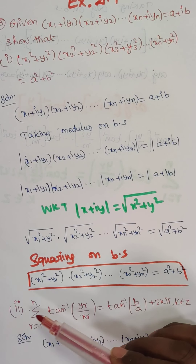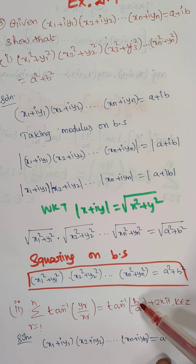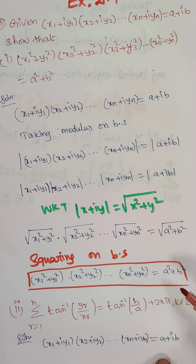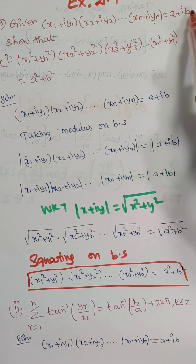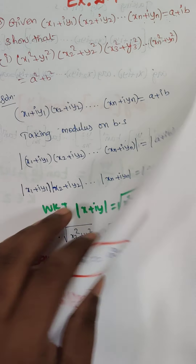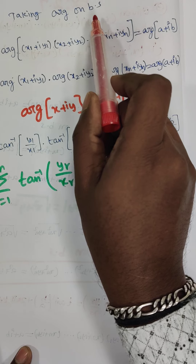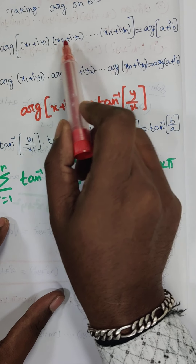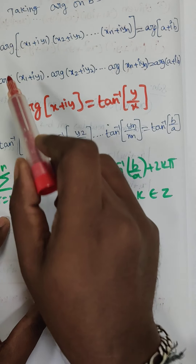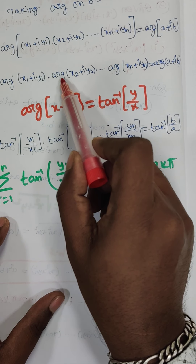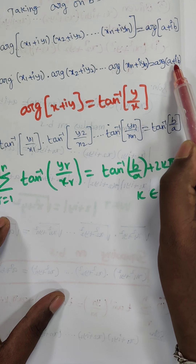The second result to prove is: summation r = 1 to n of tan⁻¹(yr/xr) = tan⁻¹(b/a) + 2kπ, where k belongs to ℤ. Starting from the given condition (x1 + iy1)(x2 + iy2)...(xn + iyn) = a + ib, I am going to take the argument on both sides. Argument of (x1 + iy1)(x2 + iy2)...(xn + iyn) = argument of (a + ib). Splitting: arg(x1 + iy1) + arg(x2 + iy2) + ... + arg(xn + iyn) = arg(a + ib).